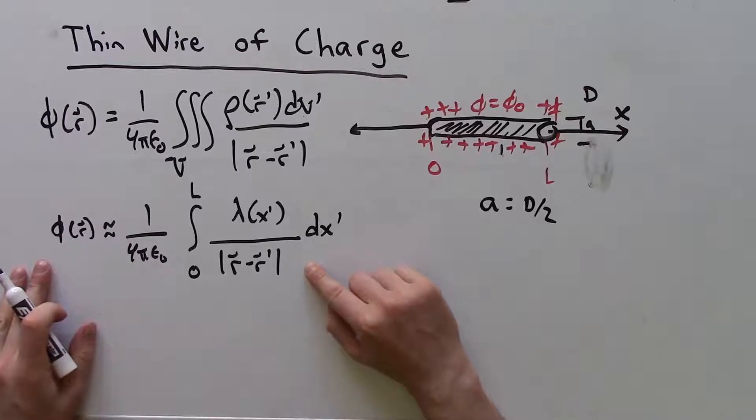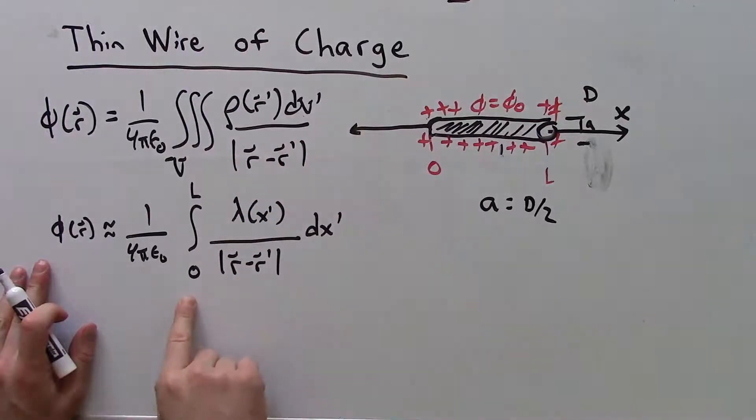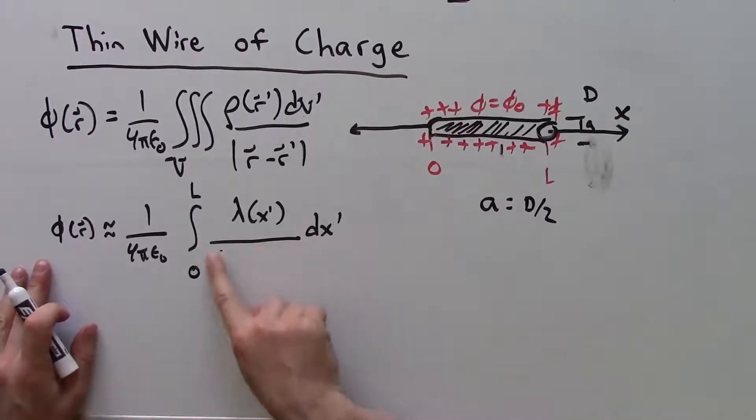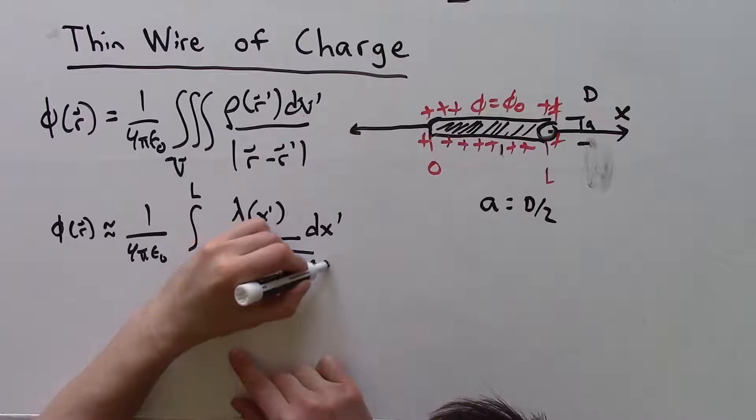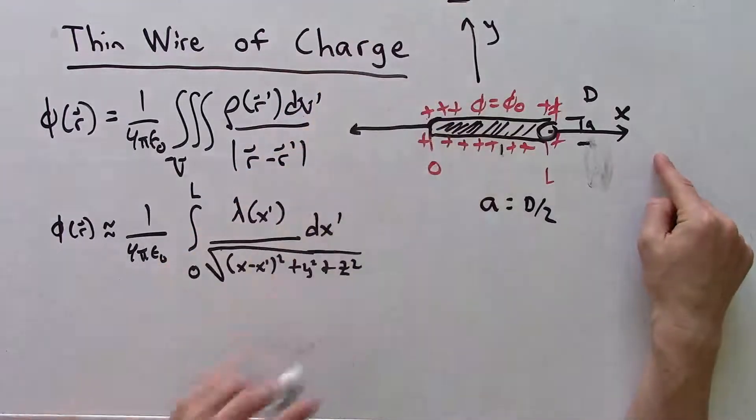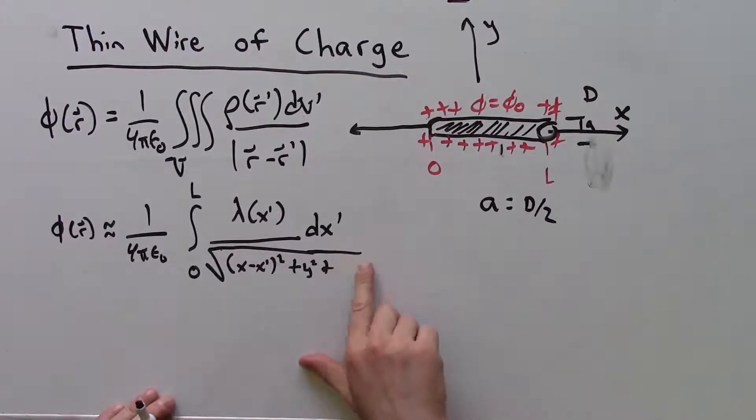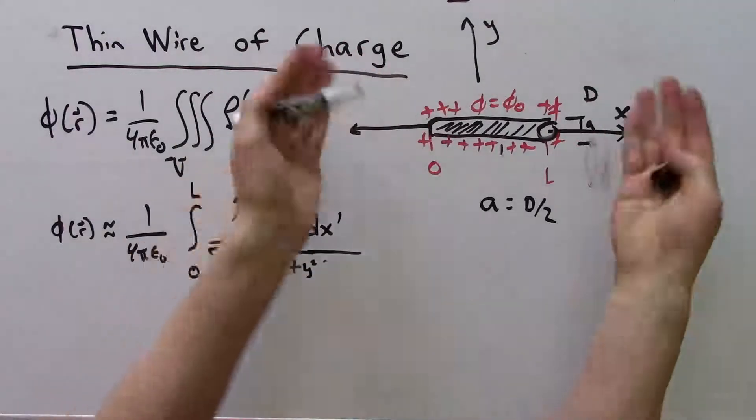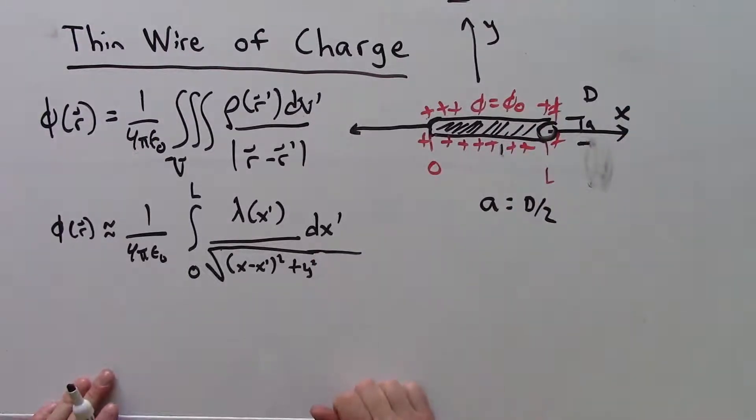This is what the integral simplifies into. The charge density over three integrals has been reduced to a linear charge density over a single integral. The denominator will simplify to the square root of (x - x')² + y² + z². For simplicity, we'll assume z equals zero, since there's a symmetry if we spin this thing around.